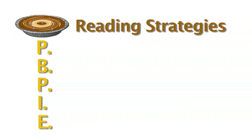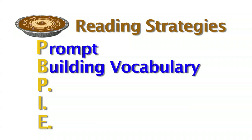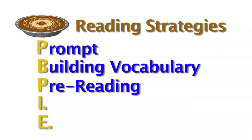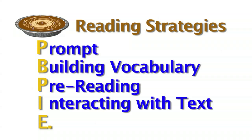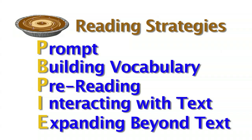The AVID curriculum gives us five specific strategies within the reading process. The acronym for it is Peanut Butter Pie, P-B-P-I-E. The P is for prompt, the B is for building vocabulary, the second P is for pre-reading, the I is for interacting with the text, and the E is for expanding beyond the text.